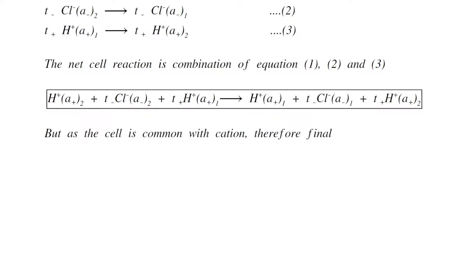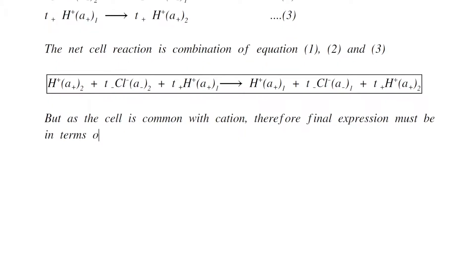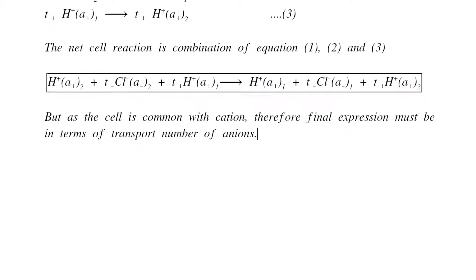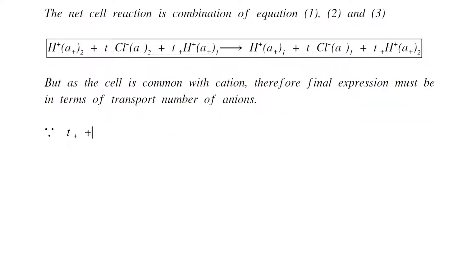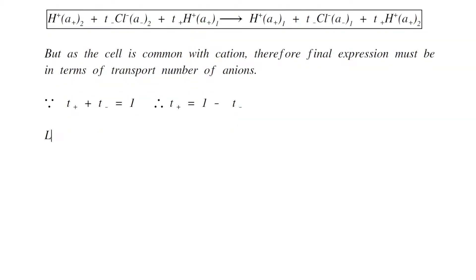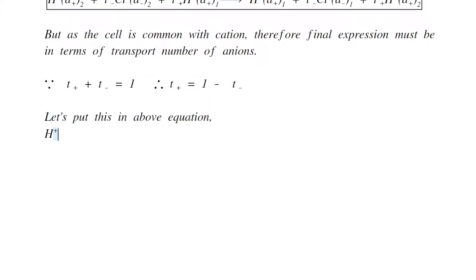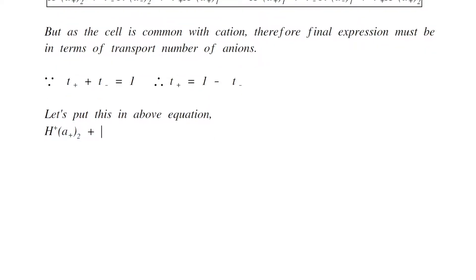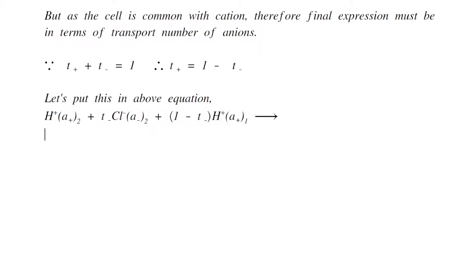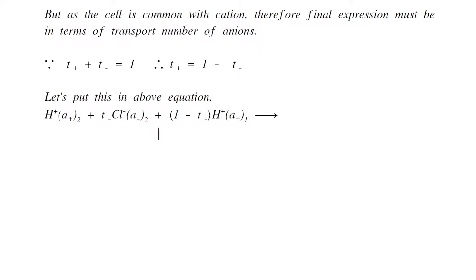Because the cell is common to cations, the final expression must be in terms of the transport number of anions. Since T+ + T- = 1, therefore T+ = 1 - T-. Substituting this value into the above equation gives: H+ of activity a2 plus T- gram equivalents of Cl- of activity a2 plus (1 - T-) gram equivalents of H+ of activity a1.